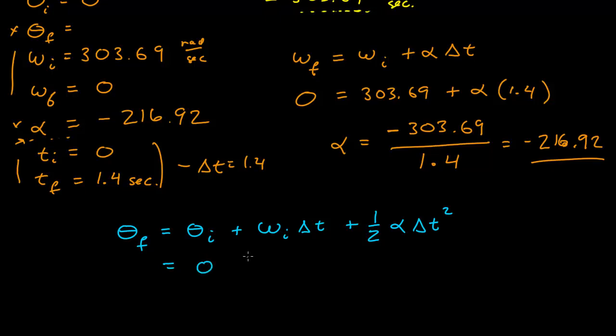This is 0 plus 303.69 times the time interval 1.4 minus one-half times 216.92 times 1.4 squared. If I plug that into my calculator, I get 273.